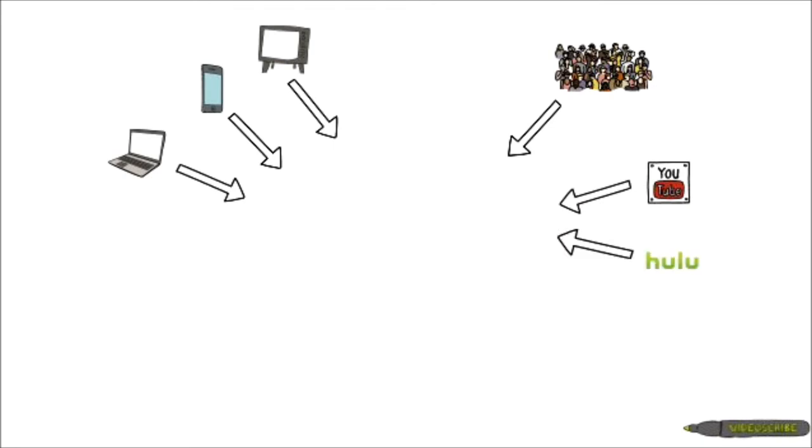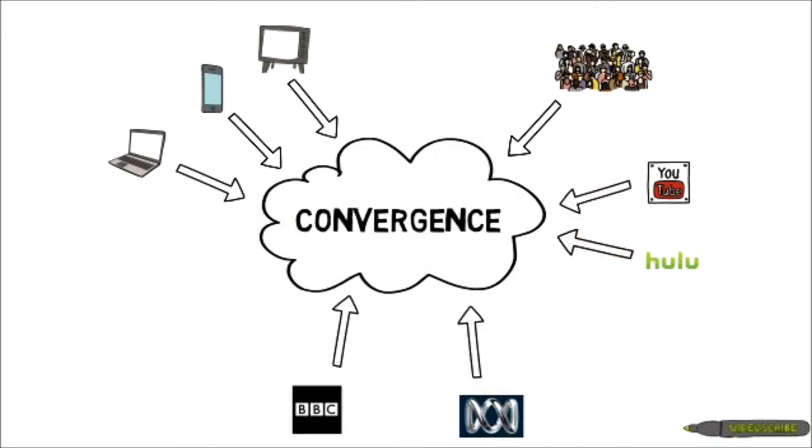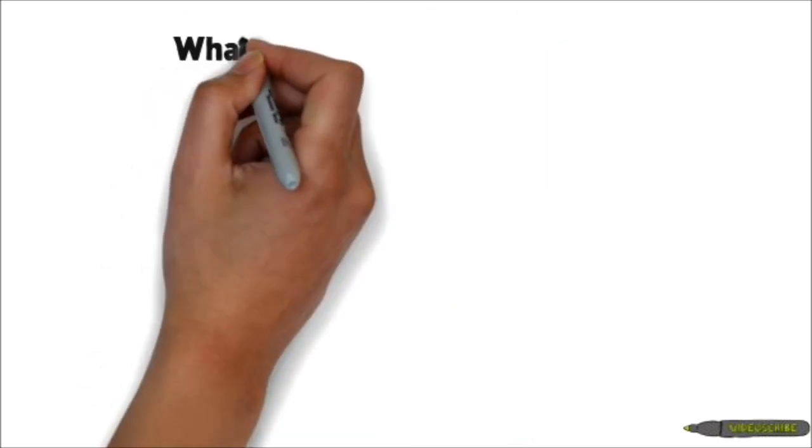This convergence has also seen television streams directly over the internet, for example, Hulu.com, YouTube.com, and directly from television stations like BBC and ABC.